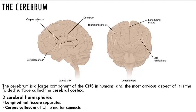Each hemisphere is concerned with the sensory and motor functions of the opposite side of the body — a contralateral function. Even though it's symmetrical in structure, the two hemispheres are not equal in function; there is lateralization or specialization of cortical function. The right brain generally analyzes sensory information and relates the body to the sensory environment, enabling you to identify familiar objects by touch, sight, smell, taste, and feel.